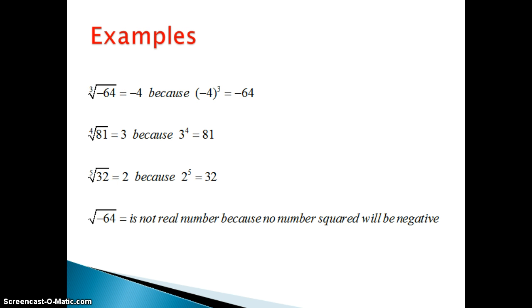Alright, let's take a look at some examples. The first one we see, we have the cube root of negative 64. And again, notice the index is odd, so it is possible that we can take the root of a negative. And that is giving us a negative 4. Now that's because when we raise negative 4 to the third power, we get negative 64.